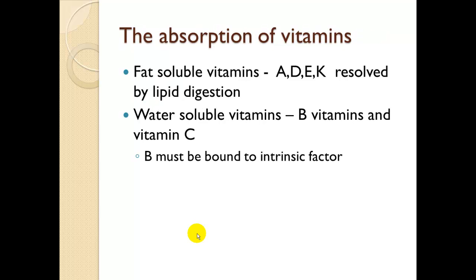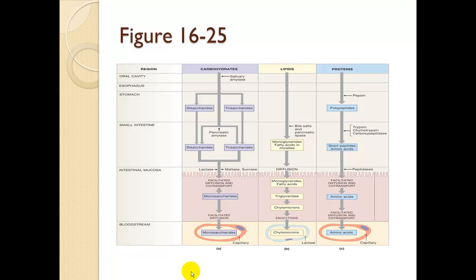The absorption of vitamins — it's important to know the difference between fat-soluble and water-soluble. A, D, E, and K are fat-soluble vitamins, dissolved by lipid digestion after the small intestine. Water-soluble vitamins are B and C; vitamin B must be bound to intrinsic factor secreted by the stomach. In the oral cavity, salivary amylase begins breakdown. In the intestinal mucosa, lactase, maltase, and sucrase break down monosaccharides for the bloodstream. Bile salts from the gallbladder handle lipids, and pepsin and pepsinogen break down proteins from the stomach.